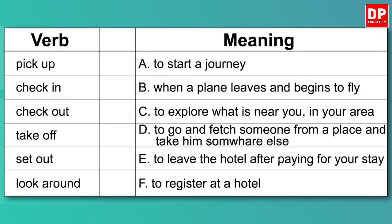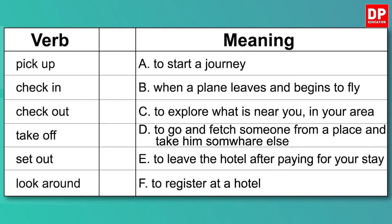Look at this activity. Here you have a list of verbs related to travel. They are all phrasal verbs. A phrasal verb is a verb that is made up of a main verb together with an adverb or a preposition. We'll learn about phrasal verbs in detail in another lesson. Now, do you know the meanings of these verbs? They are all related to travel. Let's find their meanings by matching each word with the correct meaning. You can pause the video and do it now. If you want to use your dictionary, you can do that too.